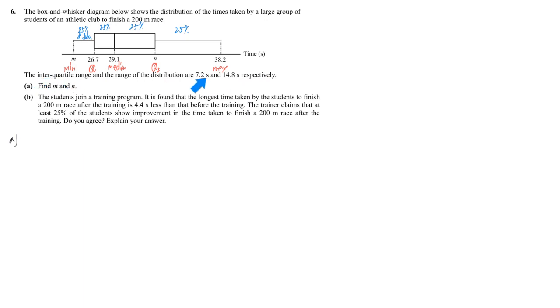Which means that the first item is the first number. IQR is 7.2, and at the same time the second information is the range, it's 14.8.